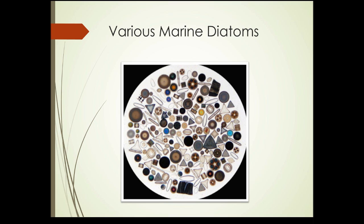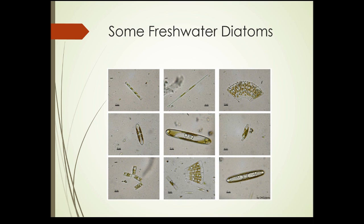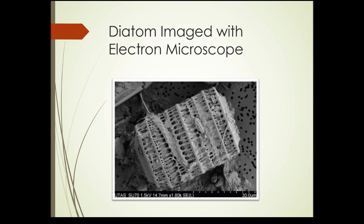Diatoms can live in virtually any aquatic habitat. This slide shows marine diatoms, which means these are from salt water. This next slide shows some freshwater diatoms. If you look at these photo micrographs, you can see large differences in shapes — from long, rod-like forms to more rounded ends and fan shapes. A number of different shapes and sizes. This next slide shows a diatom imaged with an electron microscope, which gives us a much closer look at the intricate structure of this silicon-based cell wall.